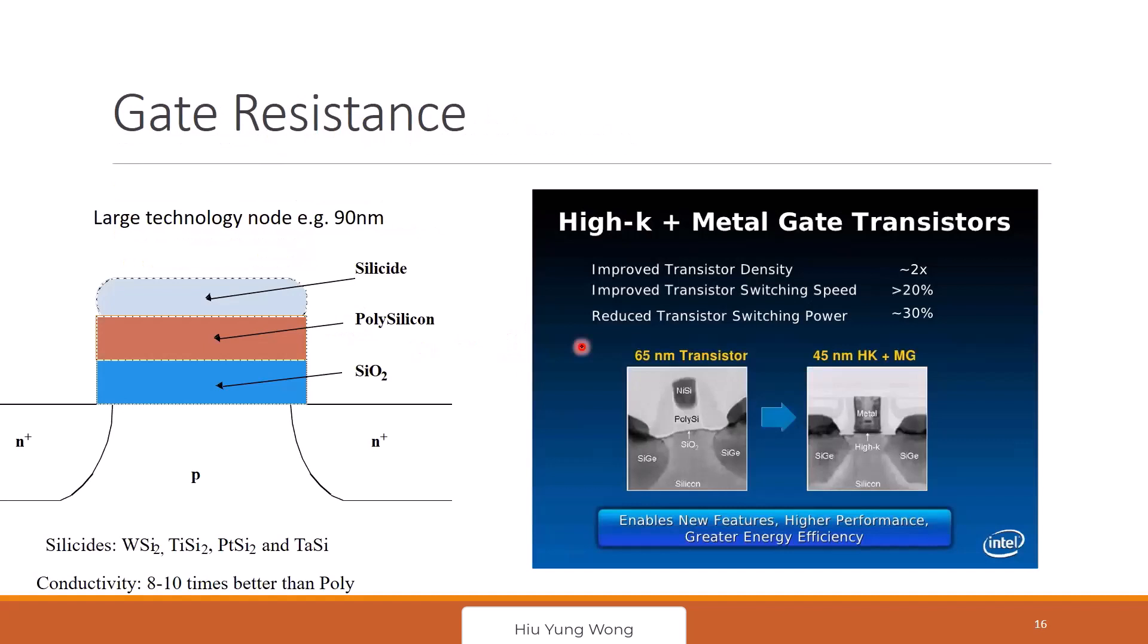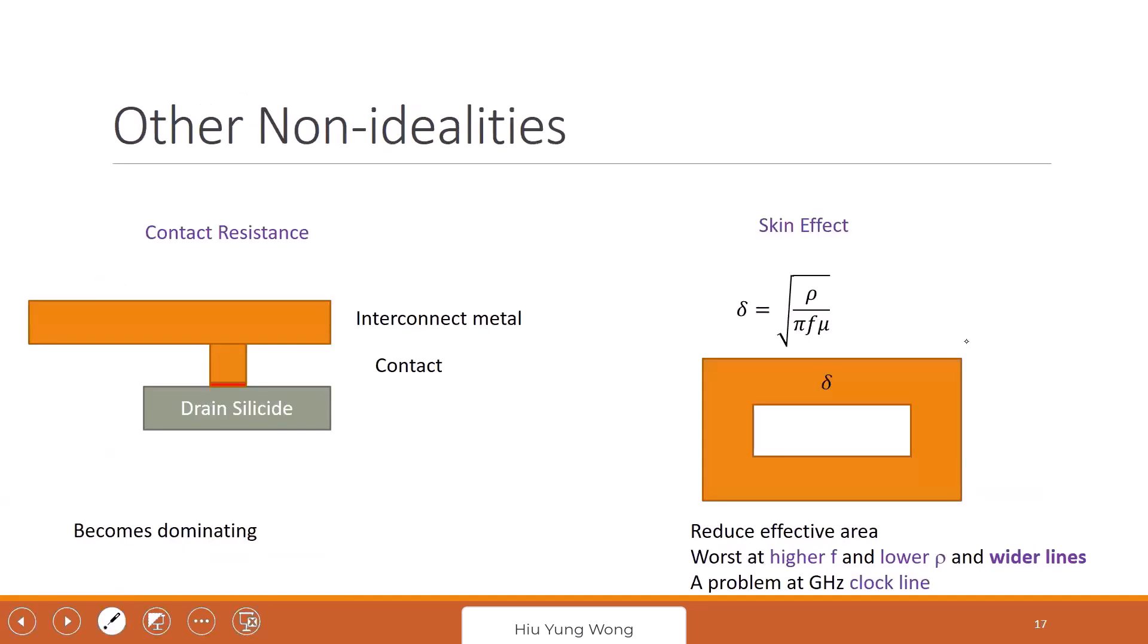So we can also reduce the sheet resistance. What do we do? I just told you we can use silicide instead of just polysilicon. We add metal and let them react and then we will become 8 times to 10 times better resistance. And besides silicide, later in 45 nanometer we just replace the whole thing by metal. So now the gate is very conductive. For the project you are going to use this 45 nanometer technology. I think it's metal gate so the poly is pretty conductive but it's not as good as the metal one. And of course there's some non-ideality.